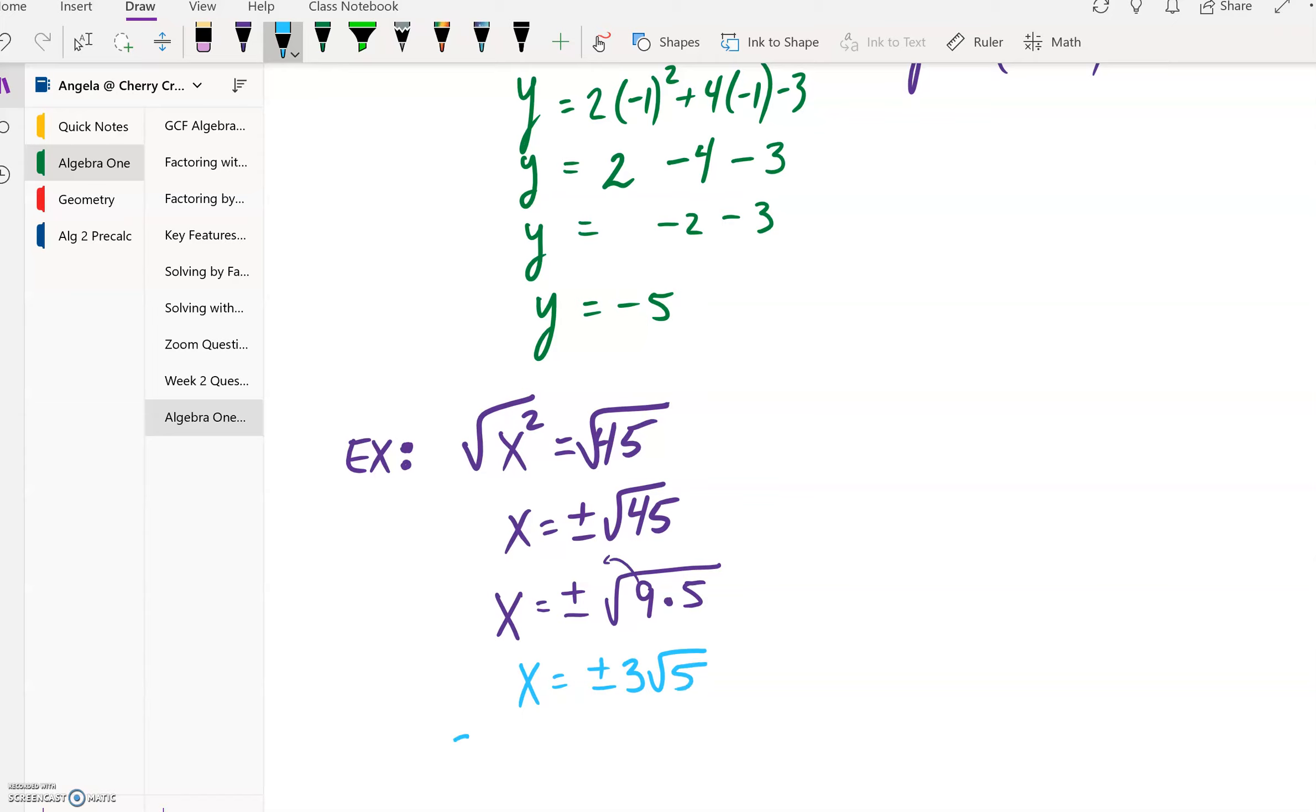And probably how you need to type that in is you'll probably need to type it in as like 3 and then I think there's a code for √5, and then you might have to type in like a -3 and then √5 for this particular problem. Okay, so watch out for those.